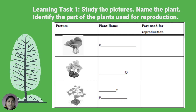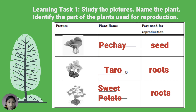Let us answer Learning Task Number 1. Study the pictures, name the plant, and identify the parts of the plant used for reproduction. The correct answers are: Picture 1 — petchay, seed; Picture 2 — taro, roots; Picture 3 — sweet potato, roots.